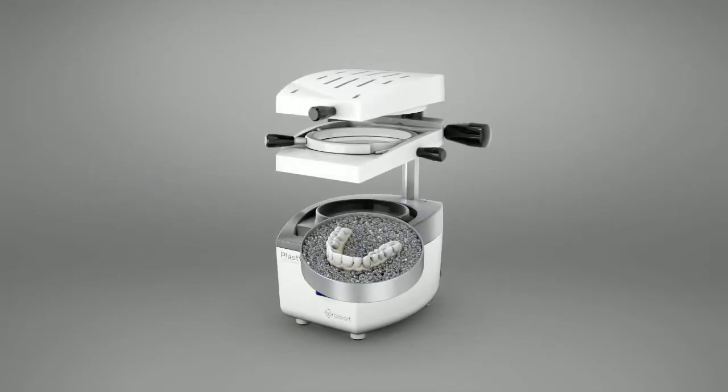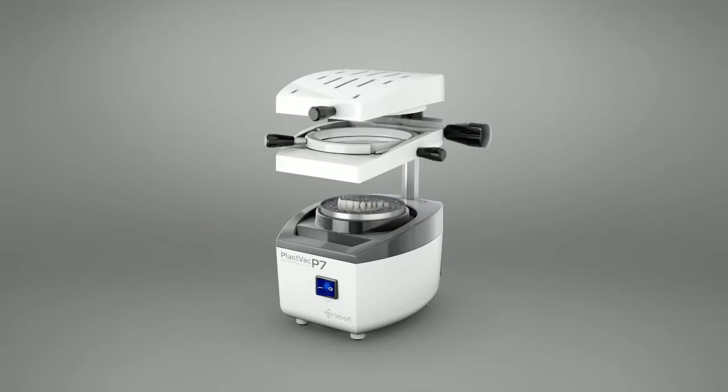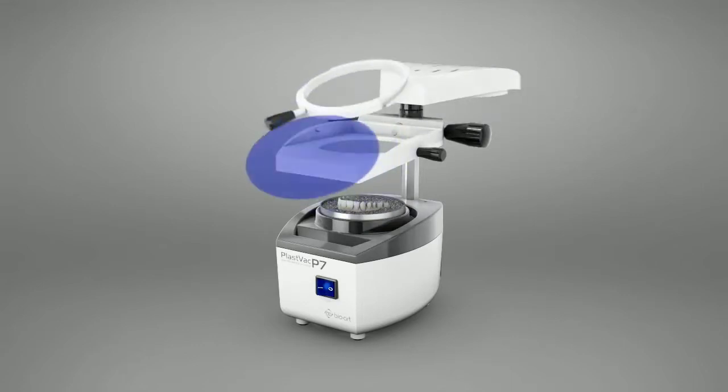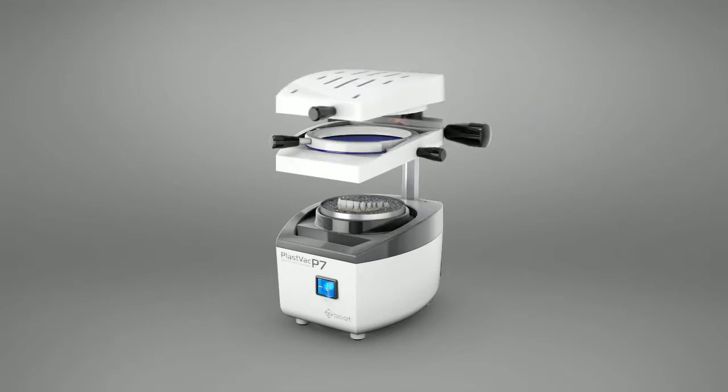The vacuum forming system is a process where a sheet, which can be of different materials, is heated and conformed on a plaster model by vacuum to give the sheet the desired shape.